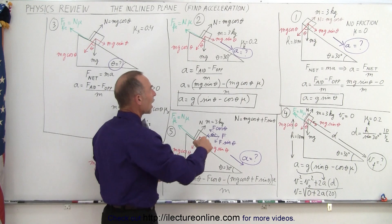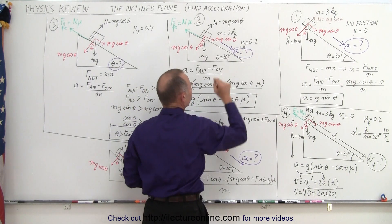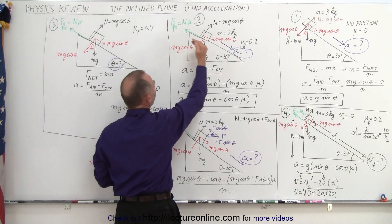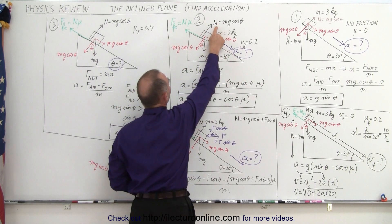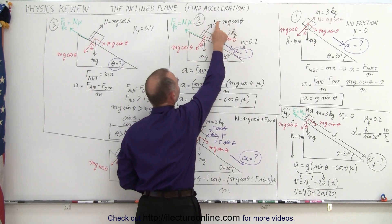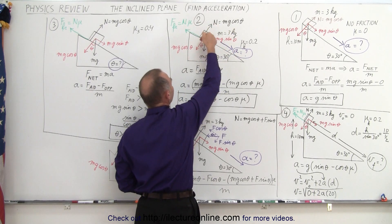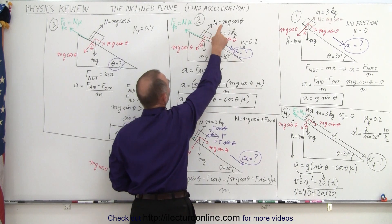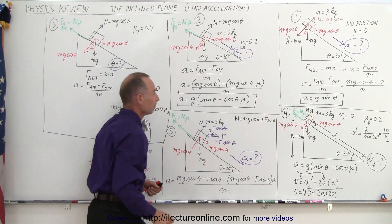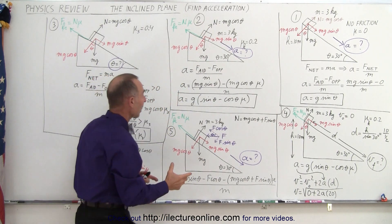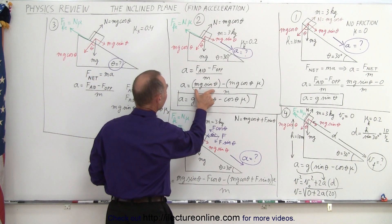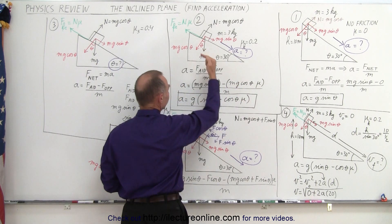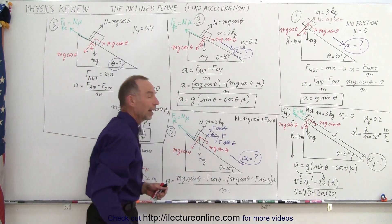In our second example, we add friction with a coefficient of friction of 0.2. There is now a friction force pointing in the opposite direction, equal to the normal force times mu. The normal force equals the component of the force of gravity that pushes the object into the incline. Therefore, the friction force is mg cosine theta times the coefficient of friction. The acceleration becomes: the aiding force mg sine theta minus the opposing friction force mg cosine theta times mu, all divided by the mass. Then we simplify that.